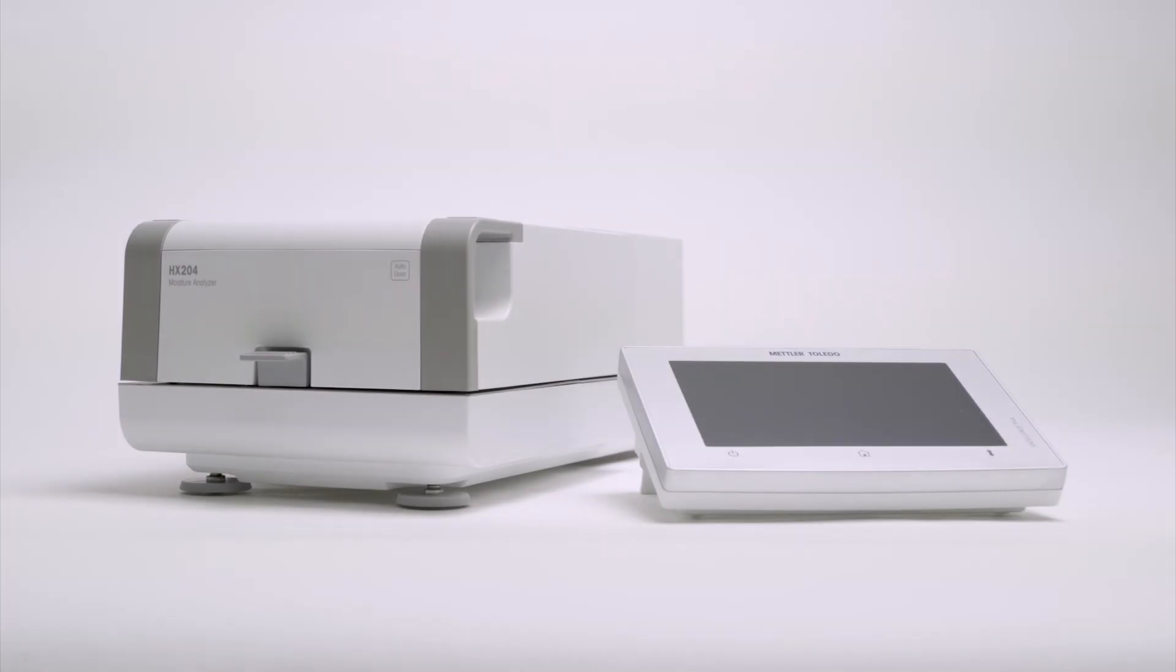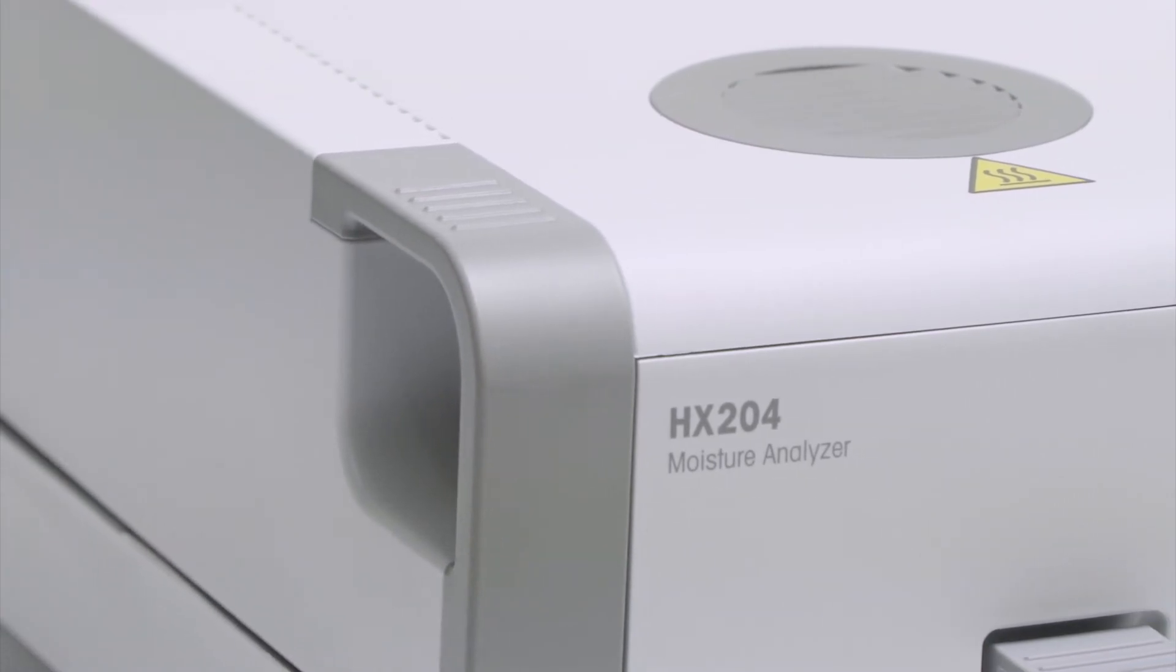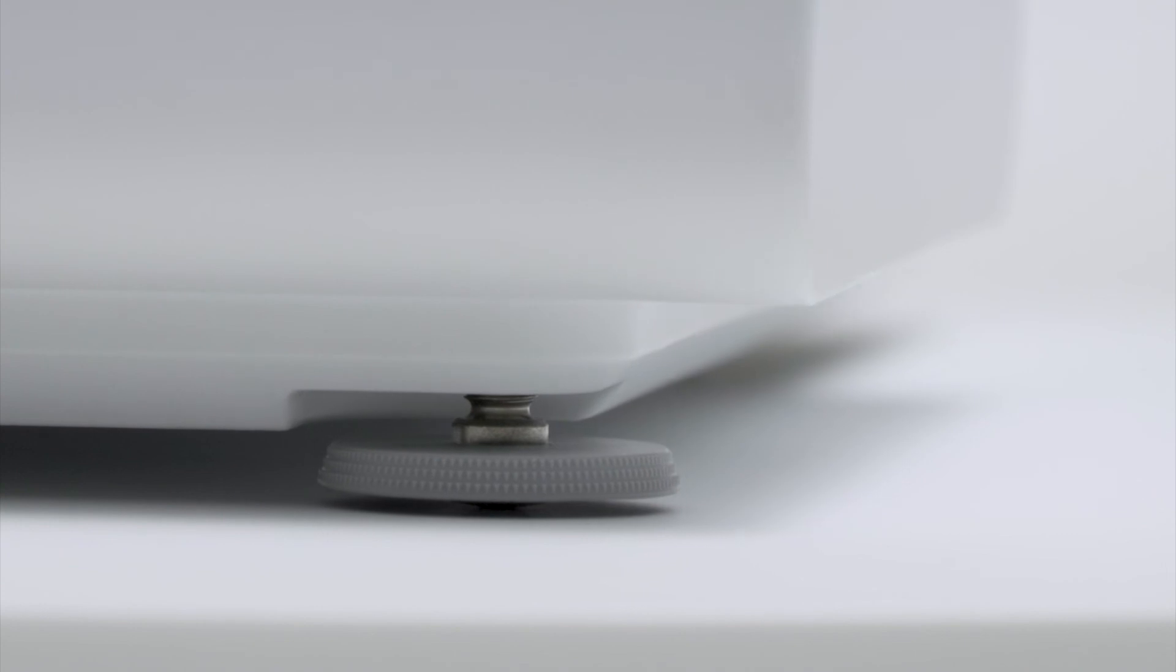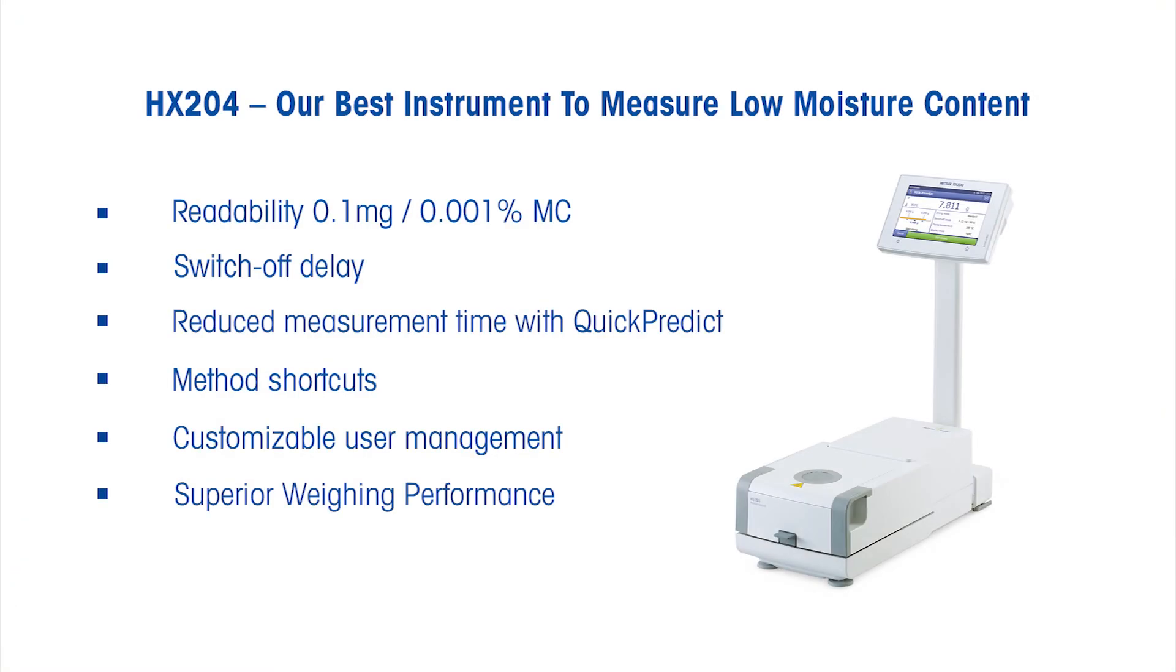All these important features are included in the Mettler Toledo HX204 Moisture Analyzer. This excellence-level instrument offers good readability, switch-off delay, result prediction software QuickPredict, customizable user management and many other advantages that simplify and speed up your moisture measurements.